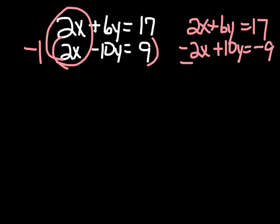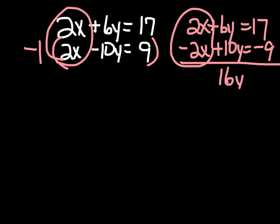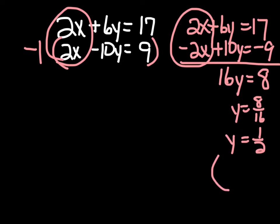Now when we add those together, our x's will eliminate — 2x minus 2x. We have 6y plus 10y, which is 16y, equals 17 minus 9, which is 8. We divide both sides by 16 and get y equals 8 over 16, which reduces to one half. So y equals one half — that becomes the y value of our solution.